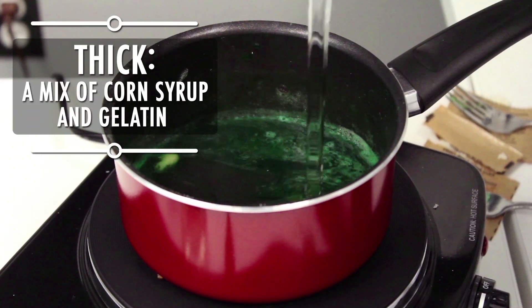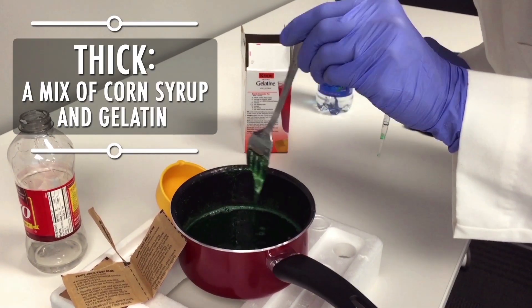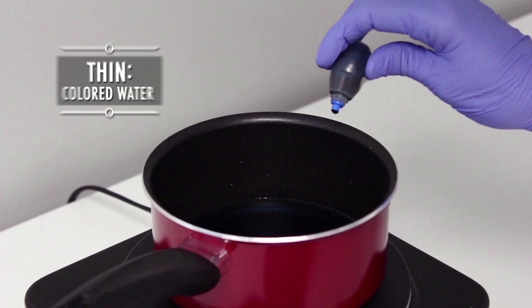For our thick fluid, I found a recipe using corn syrup and gelatin. It creates this nice, gross, goopy mess. Snot is actually a mixture of water with sugars and proteins, so corn syrup and gelatin are a pretty good stand-in. For thin snot, I'm just using colored water.